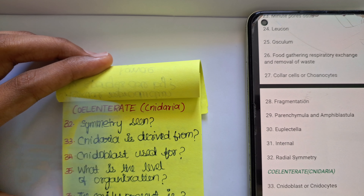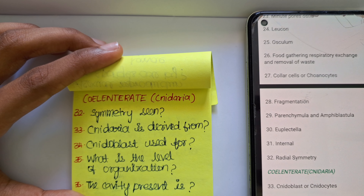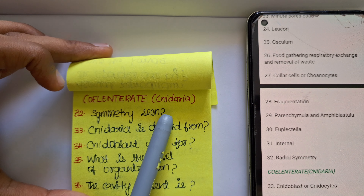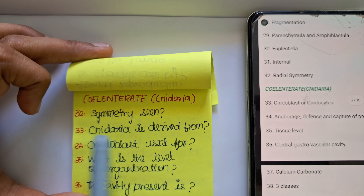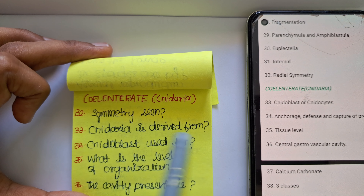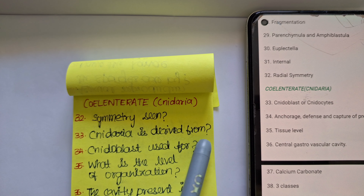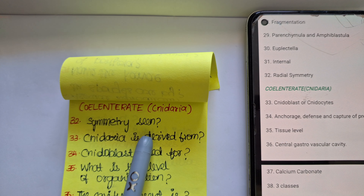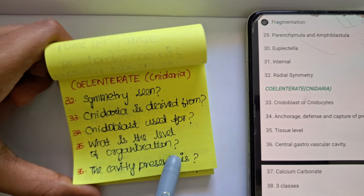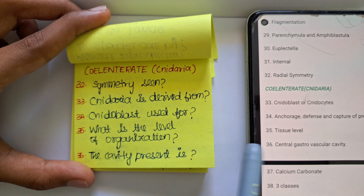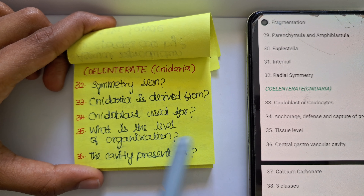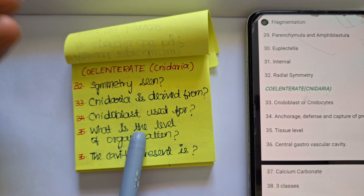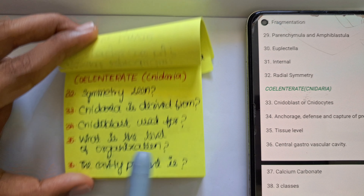Now we will move on to the next — Porifera we have discussed. Now we move to Coelenterata. The symmetry seen in Coelenterates is radial symmetry. Coelenterata is derived from what? Because these organisms contain cnidoblasts or cnidocytes. What is the use of cnidoblasts? It is used for anchorage, defense, and capture of prey. The level of organization in Coelenterata is tissue level. The cavity present is a central gastrovascular cavity.